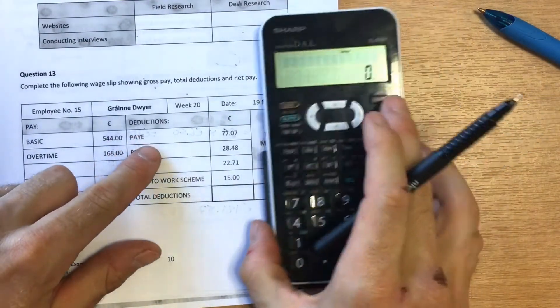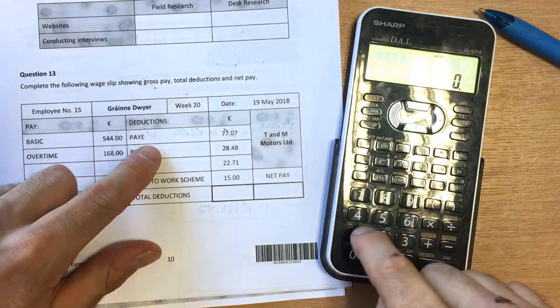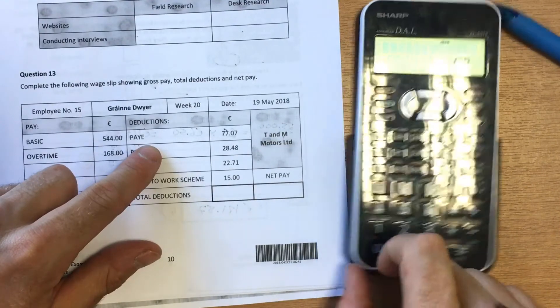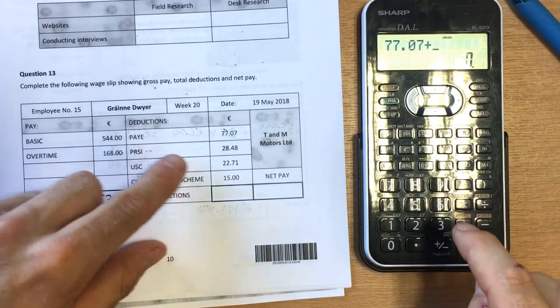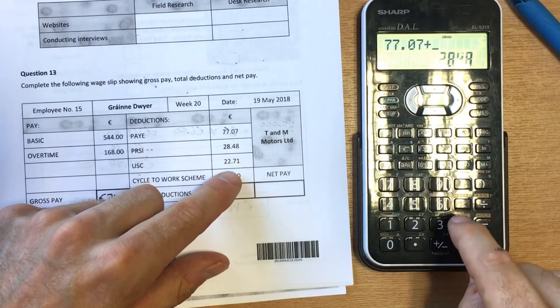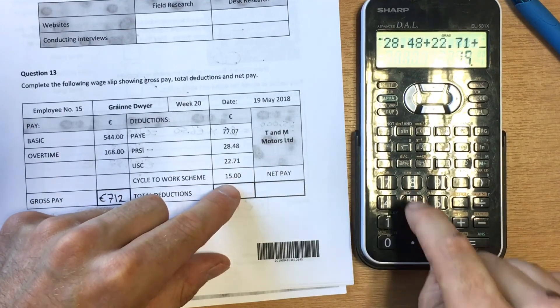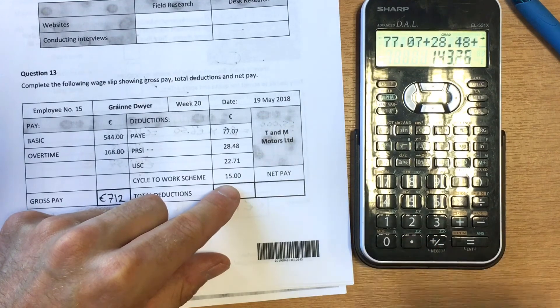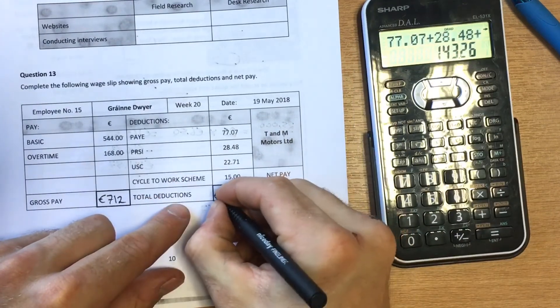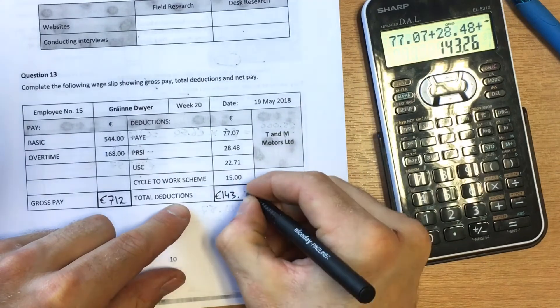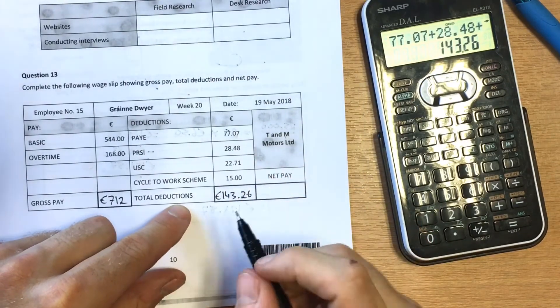What we must do next is get our total deductions, so we want to add up: 77.07 plus 28.48 plus 22.71 plus 15 euro, and that gives us a total of 143.26.